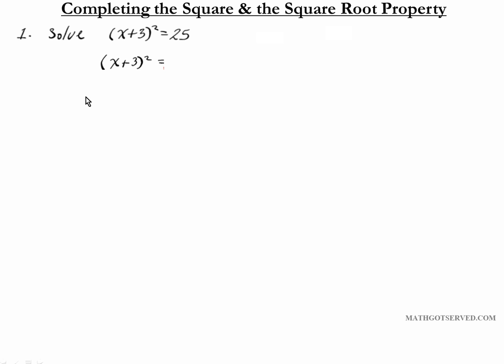The goal is to isolate x. We'll work our way from outside to inside — we'll get rid of the square first and then the 3. To get rid of the square we use the inverse operation of squaring, which is square root. So we're going to take the square root of both sides of our equation. On the left side the square root and the square cancel each other out, so we are left with x plus 3.